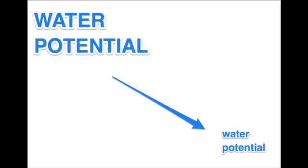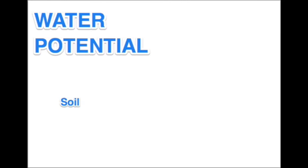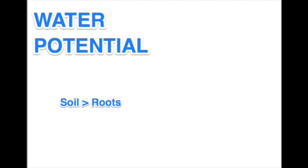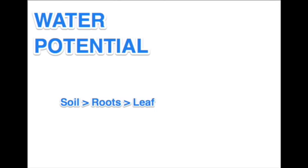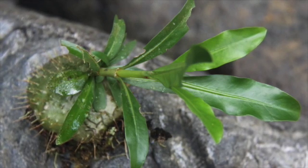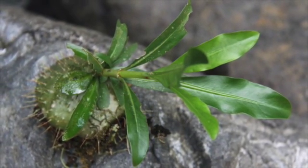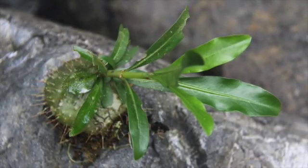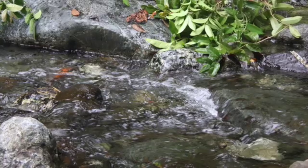Water moves from an area of high water potential to an area of low water potential. The soil must have greater water potential than the plant's roots that absorb the water. These roots must have greater potential than the leaves, which in turn must have higher water potential than the atmosphere, where water is ultimately deposited. As water is sucked up from the soil by the plant's roots, the soil's water potential decreases, which allows it to acquire more water.